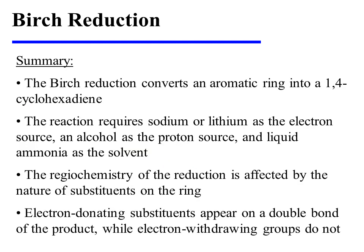In summary, the Birch reduction converts an aromatic ring into a 1,4-cyclohexadiene. The reaction requires sodium or lithium as the electron source, an alcohol as the proton source, and liquid ammonia as the solvent. The regiochemistry of the reduction is affected by the nature of the substituents on the ring: electron donating groups appear on a double bond of the product, while electron withdrawing groups do not.